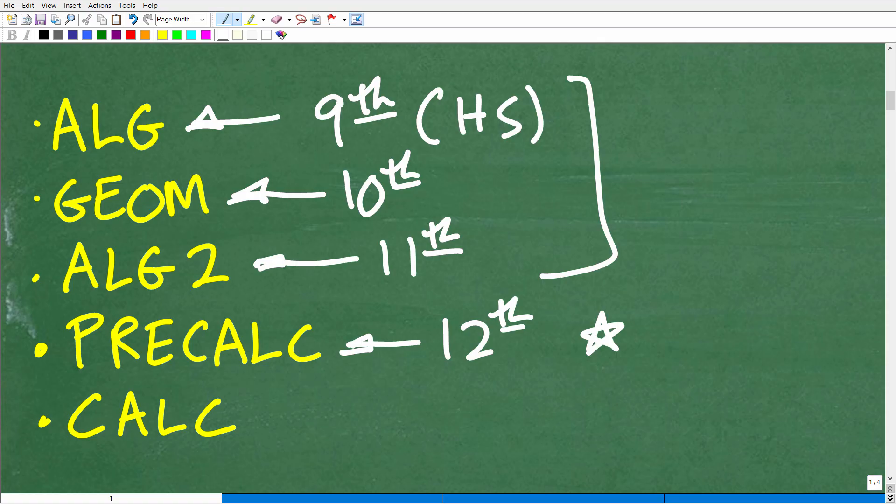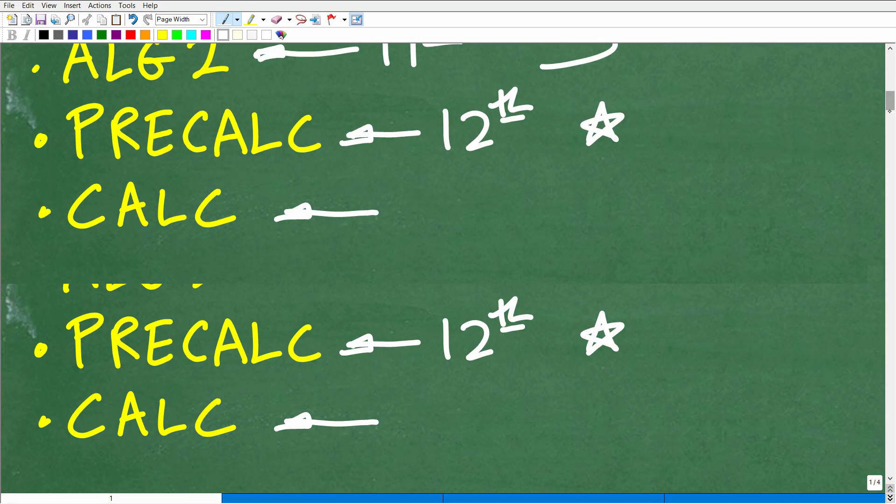There's other options for most students. Now, I will say this. The majority of high school students have to at least get through these courses here: algebra, geometry, algebra two, even if you're not going to college. This is a pretty typical track for almost all students. Pre-calculus is only going to really be there for those students who are definitely going to college.